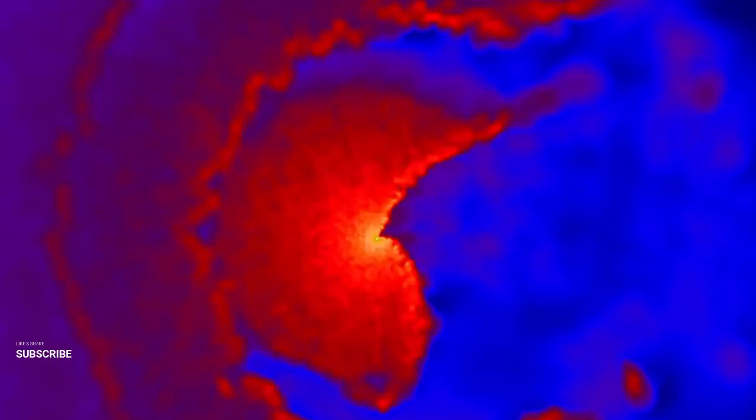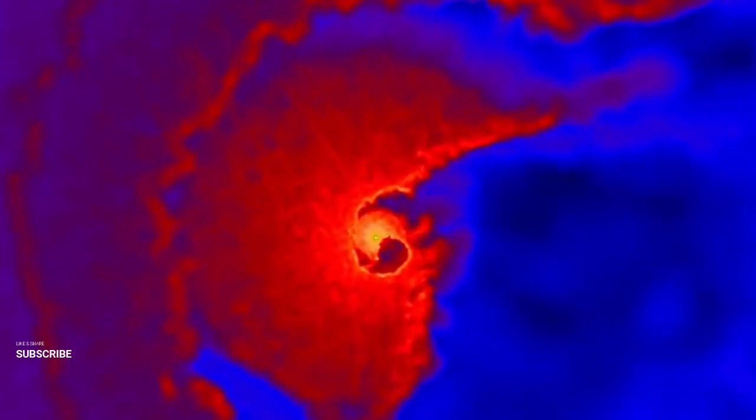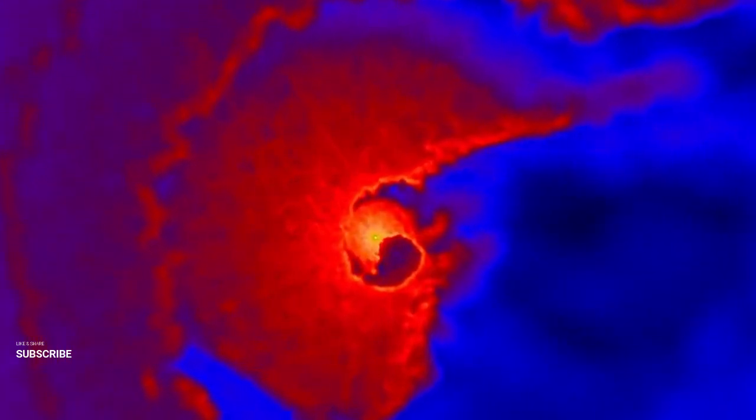The image of the M87 black hole represents a milestone in astrophotography, showcasing the power of visual imagery in science communication. It has played a significant role in engaging the public with complex scientific concepts. This engagement is vital for fostering a broader understanding and appreciation of science in society. It also highlights the importance of visual media in science, not just as a tool for data representation, but as a powerful means of storytelling and public engagement.